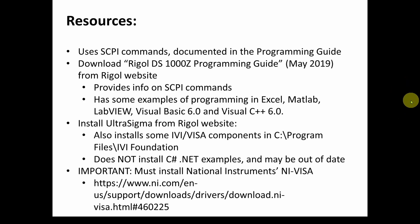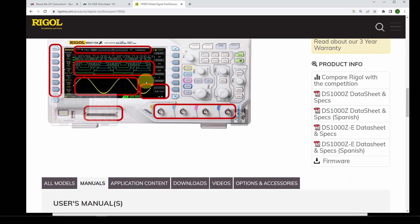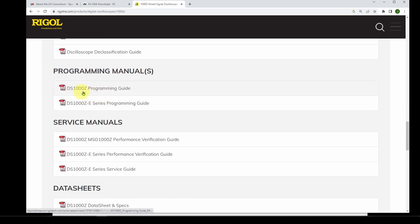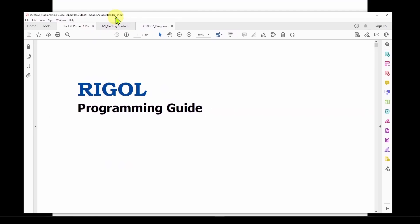All we have to do is download the examples they provide, copy over some of the code, and we're up and running. Our Rigol DS1054Z uses SCPI commands — Simple Commands for Programmable Instruments — documented in the Rigol programming guide. To get that, go to rigol-na.com, navigate to the 1000Z series, scroll down to manuals, and download the DS1000Z Programming Guide, which lists all available SCPI commands.